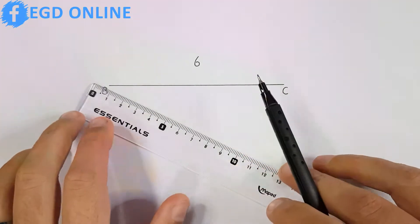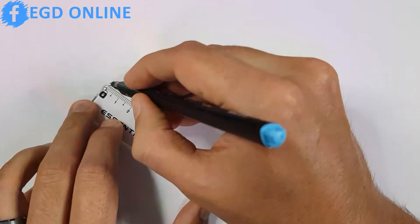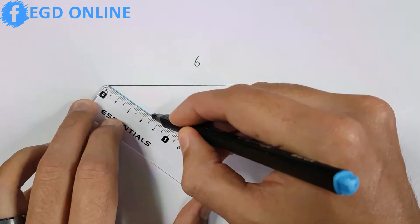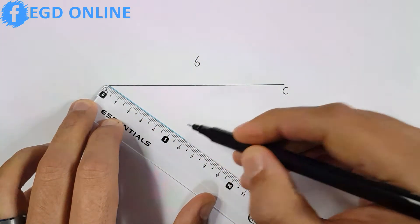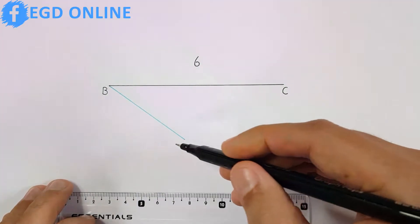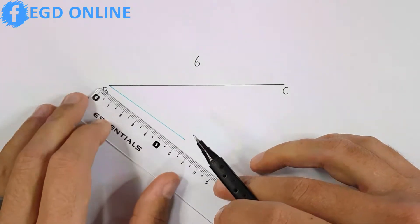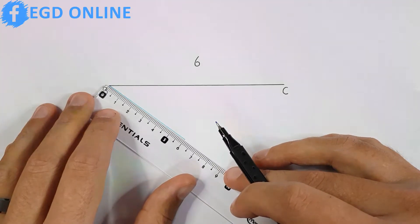So let's begin. Place your ruler on point B and draw a line that is 60 millimeters long, and then let's divide that line into six equal parts. That will mean that each part will be 10 millimeters.